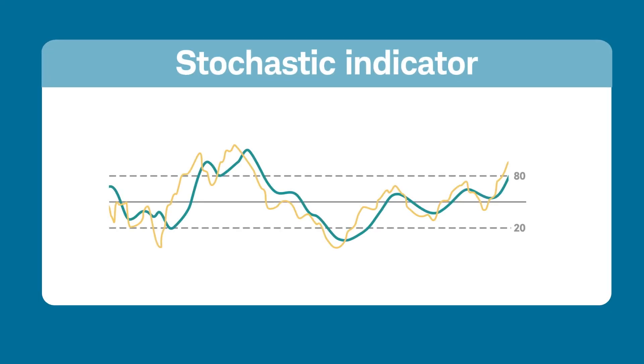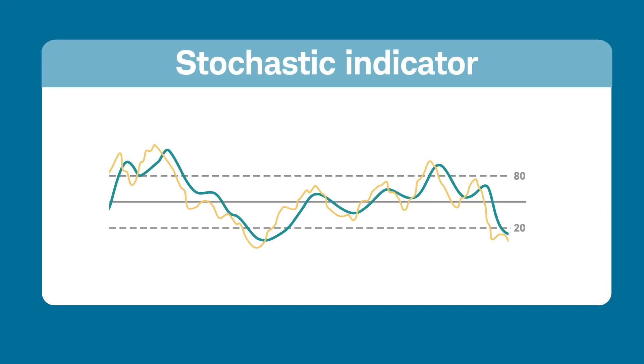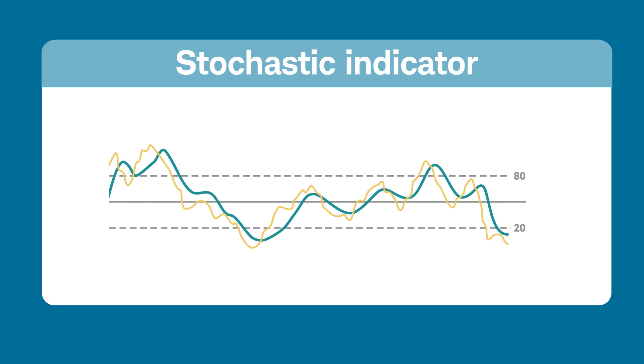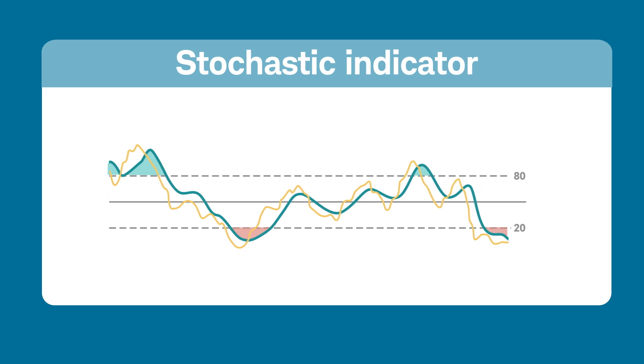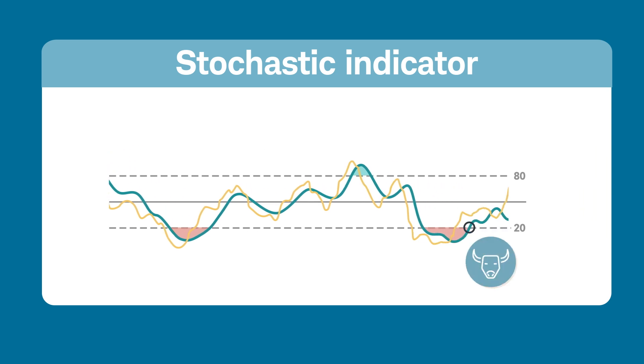The Stochastic Indicator is a technical analysis tool that helps traders see when a stock might change direction. The Stochastic measures a stock's momentum, or how quickly its price is changing, and charts it in a range to identify extreme values. These extreme values are called reversal zones and may suggest that a security is overbought or oversold, which could mean the stock is set to reverse direction — a bullish or bearish signal. I'll show you how to set up and use the Stochastic Indicator on the Thinkorswim desktop platform.